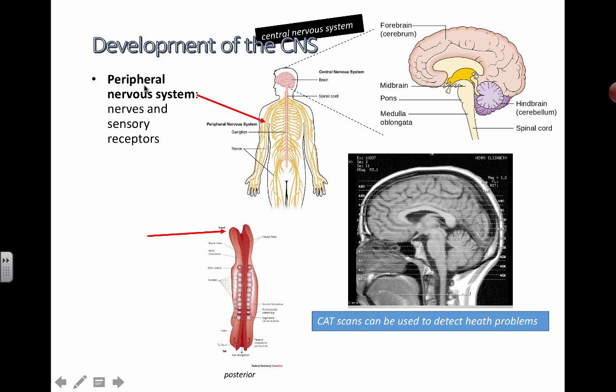Periphery means around the sides. You've heard of your peripheral vision — what you can see from the sides of your eyes when you're actually looking forward, what you try to gather in terms of information from around you.